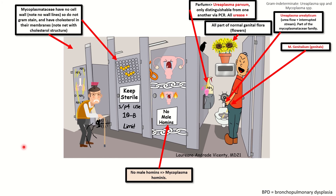The bugs in this family have no cell walls, so you'll notice there are no wall lines within this bathroom. And they do not gram stain because of that. They also have cholesterol in their membranes, so you'll notice that we have this sort of cholesterol structure within this net that is on top of this door.